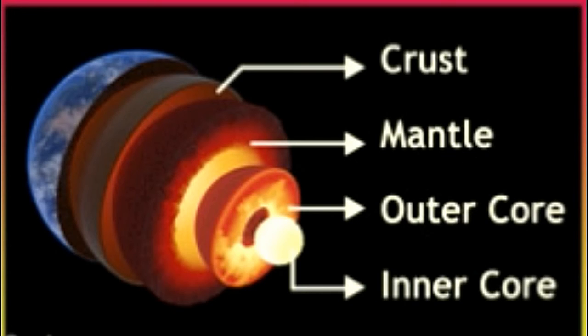The inner core, as the name suggests, is the innermost layer of the Earth, and is characterized by extremely high temperature that may reach 9,000 to 13,000 degrees Fahrenheit and pressure conditions.